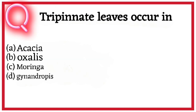Question fourteen. Tripinnate leaves occur in A. Acacia, B. Oxalis, C. Moringa, D. Gynandropsis. So correct answer hai option C. Moringa.